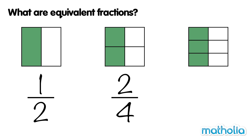In the third square, there are six equal parts. Three parts are coloured. Three sixths of the square is coloured.